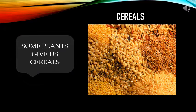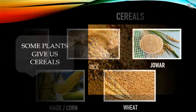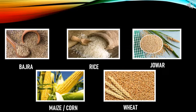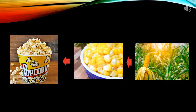Some plants give us cereals, and those are bajra, rice, joar, maize or corn, and wheat. Children, do you like popcorns? Yes, the popcorn we enjoy at movies! From where do we get popcorn? We get popcorn from corn, and corn comes from the maize plant. So ultimately, plants also give us popcorns.